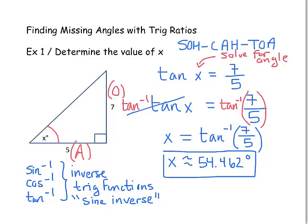So if you have to undo a trig function to get an angle by itself, you'll be using the inverse trig functions: sine inverse, cosine inverse, and tangent inverse. Whenever you have to find the value of a missing angle — like tangent of x equals 7 fifths — you can expect to use the appropriate inverse trig function.